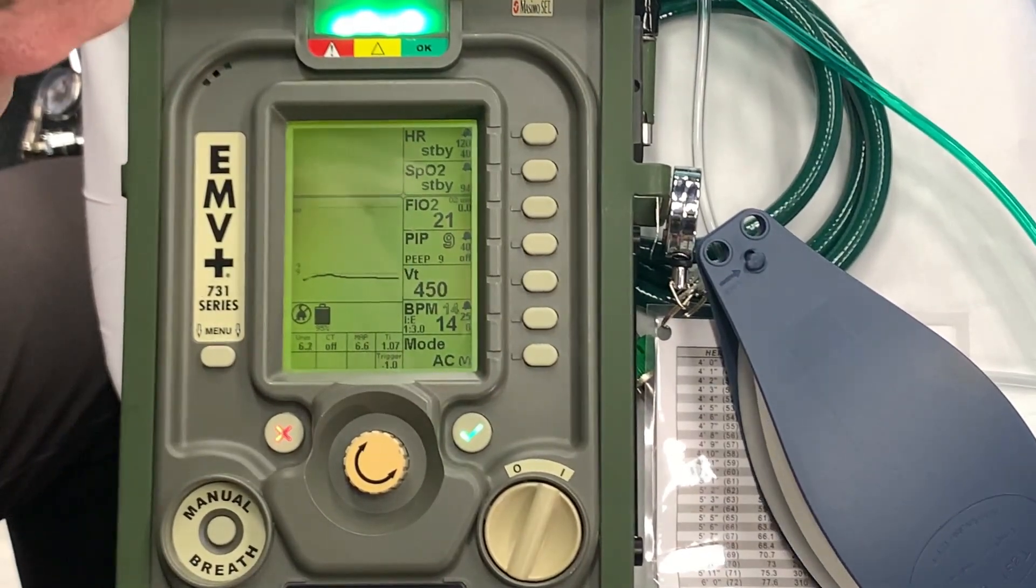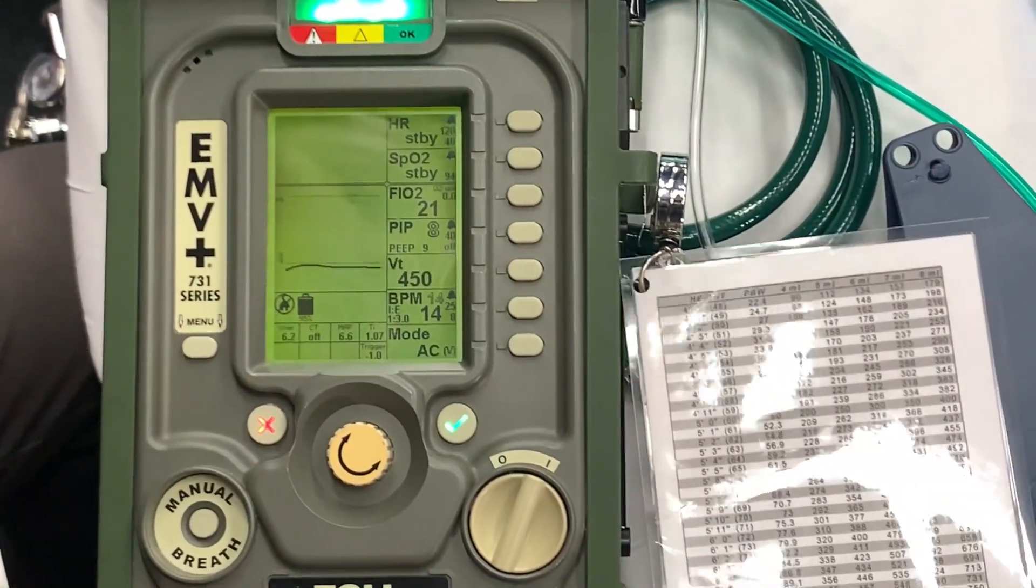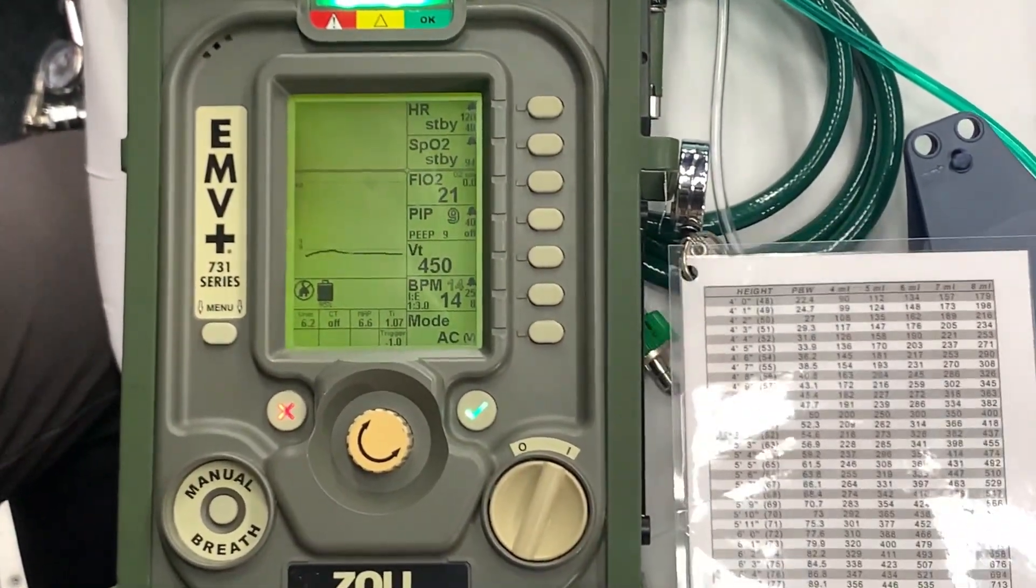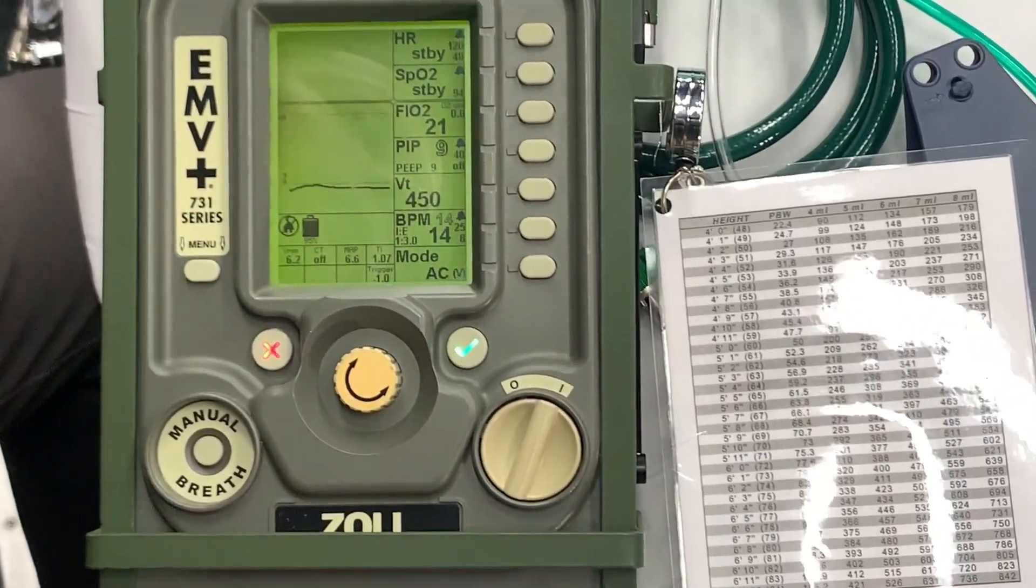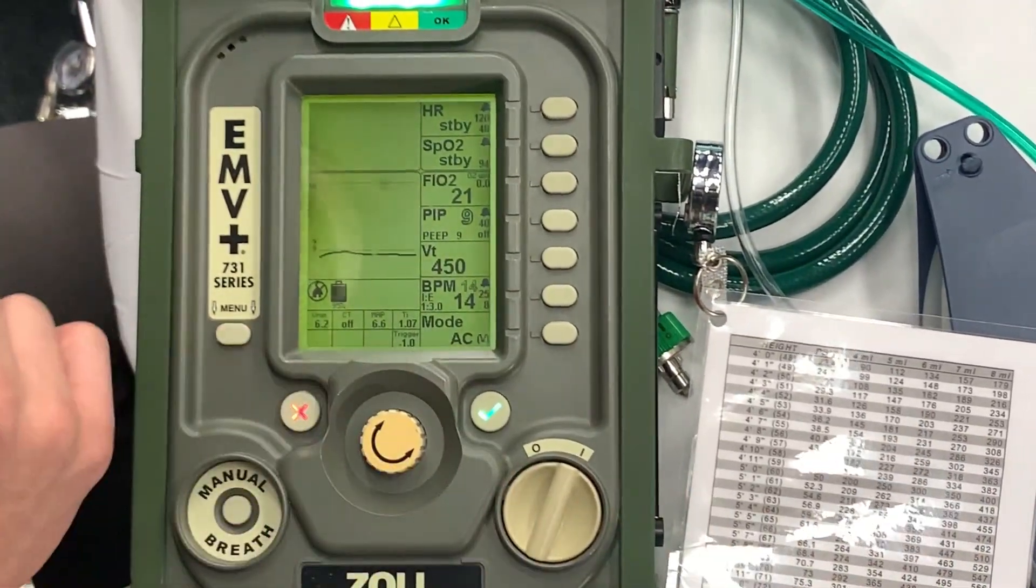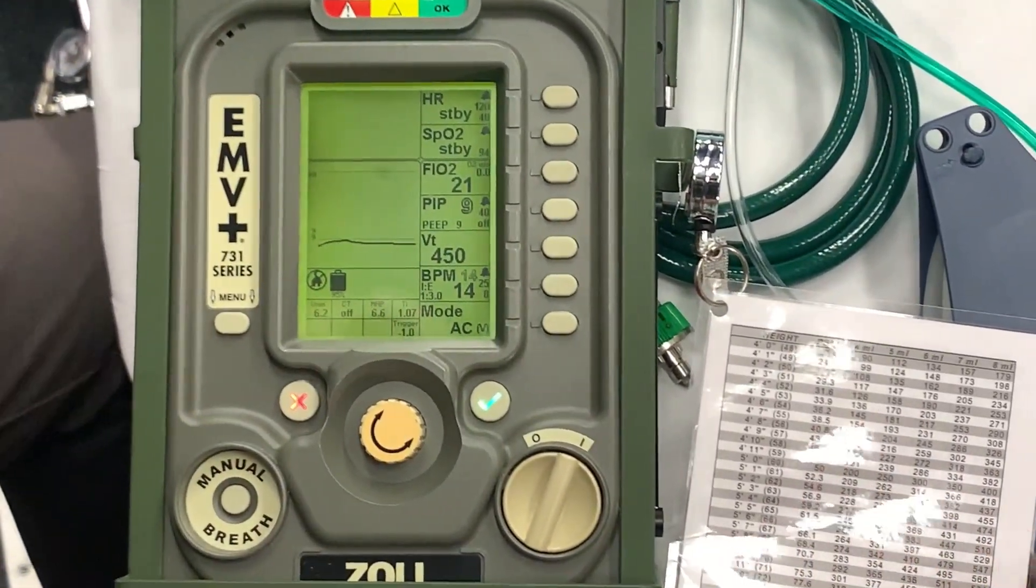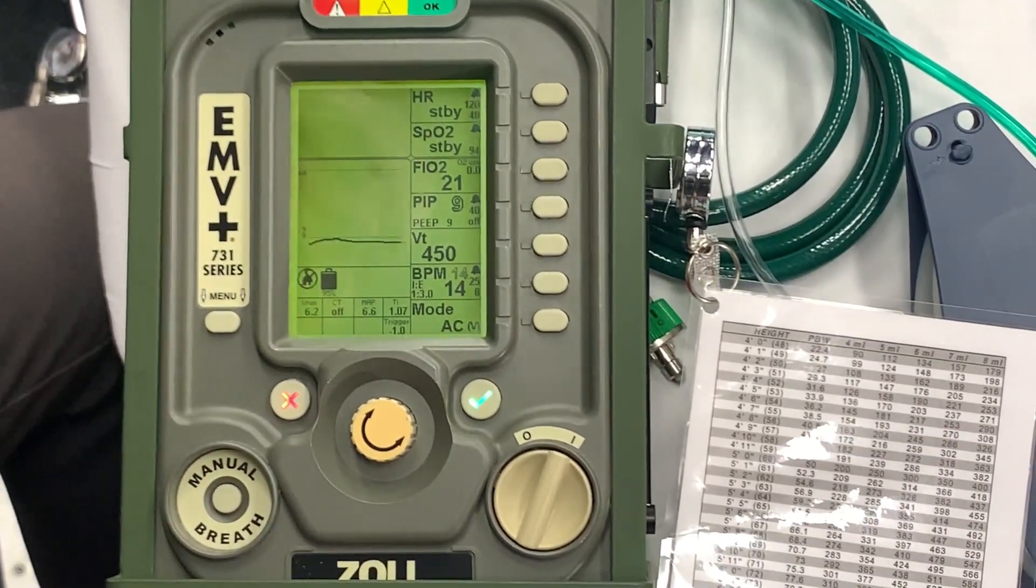An ideal body weight is something that we like to carry a good chart for. This is why we have this attached to our ventilator right here. This is for males. Now this other side we have for females, it changes. And we set our tidal volumes based upon four all the way up to eight cc's per kilogram of that patient's ideal body weight.